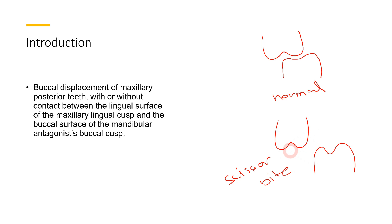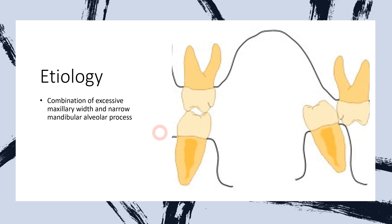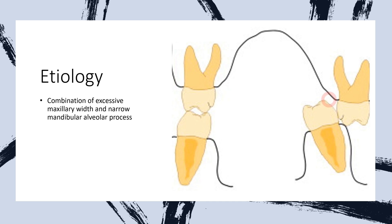That is why it is called scissor bite, or it is also called as Brodie's bite. If we talk about the etiology of scissor bite, you can see that the maxillary molar is completely present buccal to the mandibular molar. The reason behind developing scissor bite is basically excessive maxillary width along with a narrow mandibular alveolar process. This maxillary process is excessive in width, and therefore the maxillary molar is placed buccally compared to the lingually placed mandibular molar, which eventually leads to scissor bite malocclusion.